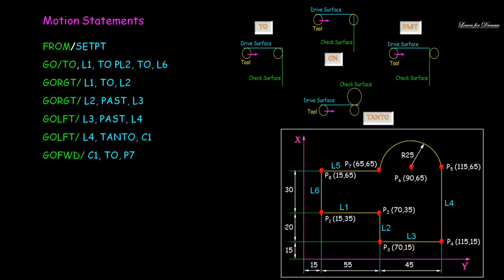From point 7 to point 8, again GO RIGHT slash L5 PAST L6. Point 8 to point 1, GO LEFT slash L6 PAST L1. GO TO slash set point. GO TO is rapid travel like G00. Then as usual, coolant and spindle off, and program end.